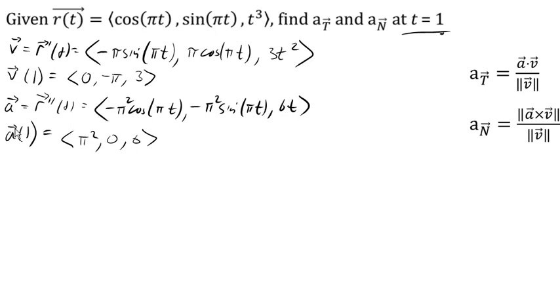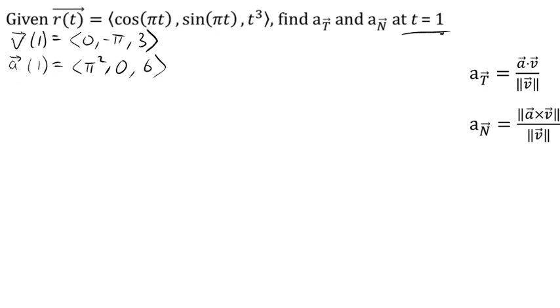So cleaning up a little bit, for our tangential component, we need a dot v. And so using the dot product with our vectors here, we'll have 0 times pi squared is 0. Negative pi times 0 is 0. And 3 times 6 is 18. And so that dot product is 18.